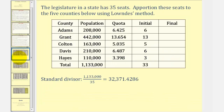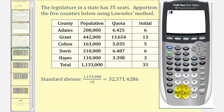Let's take a look at an example. The legislature in the state has 35 seats. Apportion these seats to the five counties below using Lowndes' method. The first step is to find the standard divisor. We sum all the populations, which is 1,133,000, and divide this by the number of seats available, which is 35, giving us our standard divisor. Now to find the quotas, we take each state population and divide by the standard divisor. To check the first one, for Adams we take 208,000 and divide by 32,371.4286, giving us a quota of approximately 6.425. We would do the same for the remaining four counties.